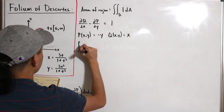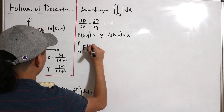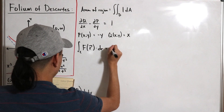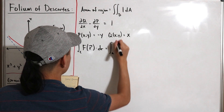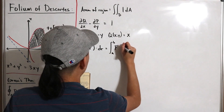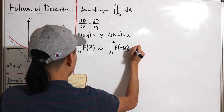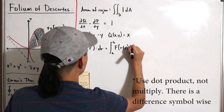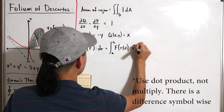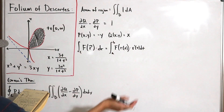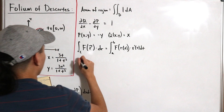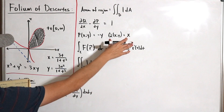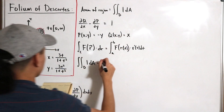We also use the formula that the line integral of a vector field F with respect to the parameterized vector function r is computed as the integral from a to b of F(r(t)) · r′(t) dt. Starting from our double integral of 1 dA, we can plug back our chosen functions.